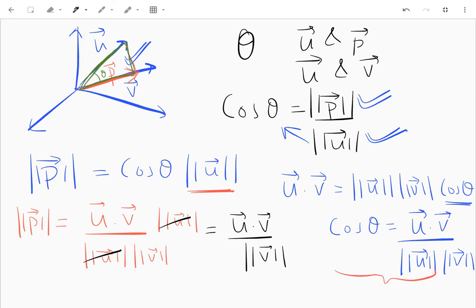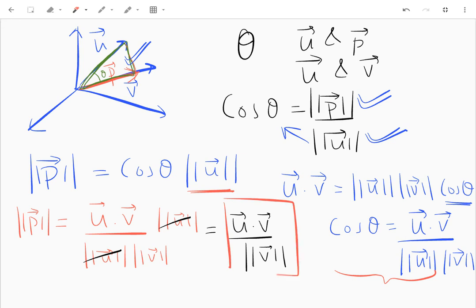And this is the formula for the magnitude of the projection of a vector onto another vector. This is the formula for projection of u on v.